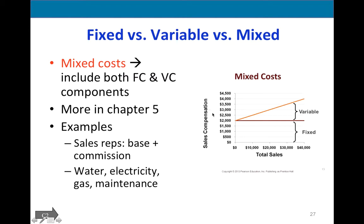Direct labor, direct materials, and indirect materials are examples of variable costs. Some costs, such as utilities, have both components — they are mixed costs. Even if you're making no cars, you still need some electricity (fixed component), but the more cars you make, the more machines you run (variable component). Similarly, sales reps often have a base salary regardless of how many items they sell, plus commission that increases with sales. Mixed costs include both fixed and variable cost components, and we will talk more about them in chapter five.